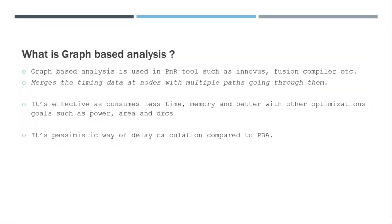So what is graph-based analysis? This graph-based analysis during delay calculation is used mostly by the PNR tools because it takes much less runtime and consumes much less memory. So it's mostly used in Innovus, Fusion Compiler, or any other PNR tools. Basically what it does is it merges the timing data at nodes with multiple paths going through them.